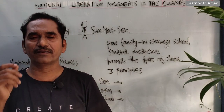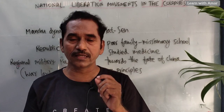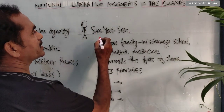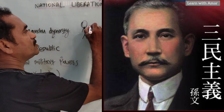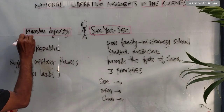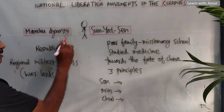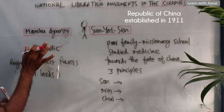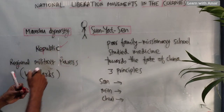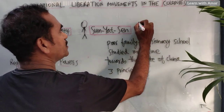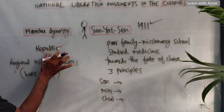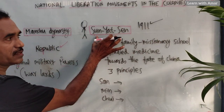Common people were very unhappy. So at that time, in the year 1911, Sun Yat-sen overthrew the Manchu dynasty and made China a Republic country. China became a Republic country in the year 1911 under Sun Yat-sen.